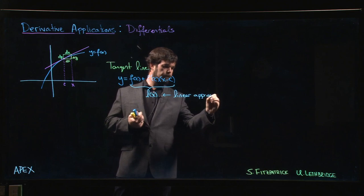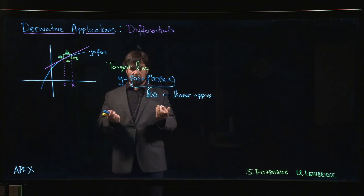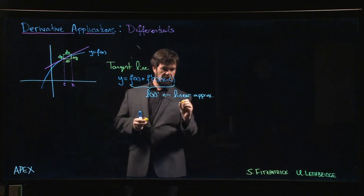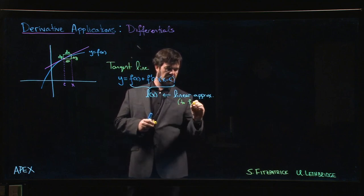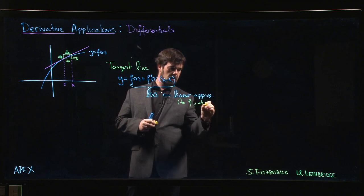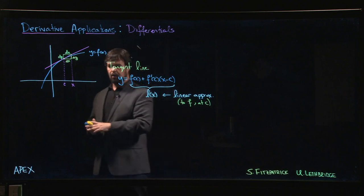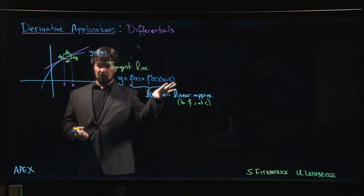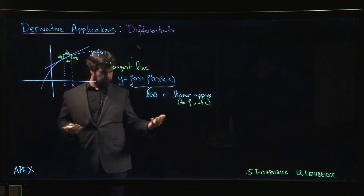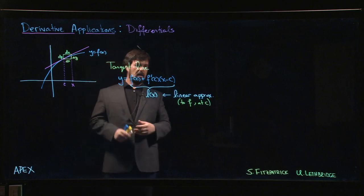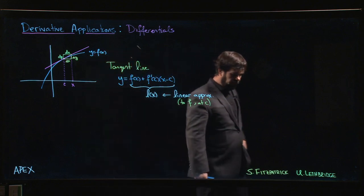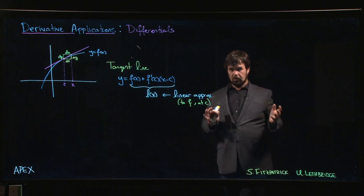To be a little bit more detailed, we might say it's a linear approximation to the function f at the point c. Clearly the linear approximation depends on both the function and the point at which you're approximating. Linear approximations are used frequently throughout mathematics and science.